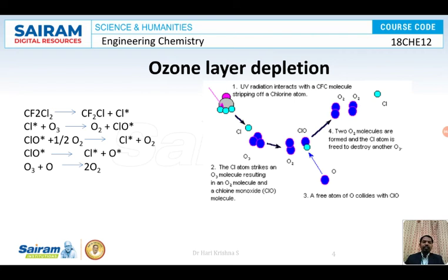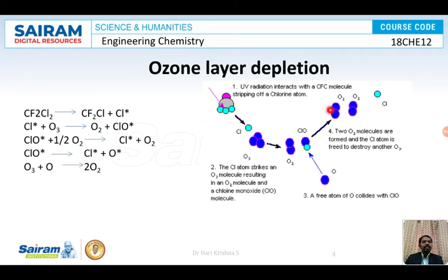You can see it very clearly in the diagram shown here. The CFCs present here — UV radiation comes and you get a chlorine free radical. The chlorine free radical attacks the ozone to form oxygen and CLO free radical. The CLO free radical reacts with a free atom of nascent oxygen, and you get two oxygen molecules while a chlorine free radical is released. This chlorine free radical once again attacks another ozone molecule and the reaction continues. Because of one chlorofluorocarbon, N number of ozone molecules are depleted.